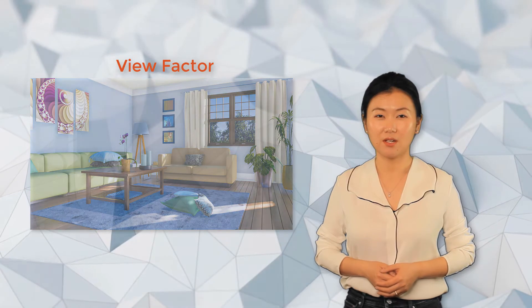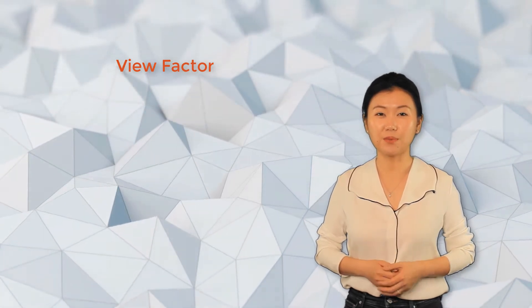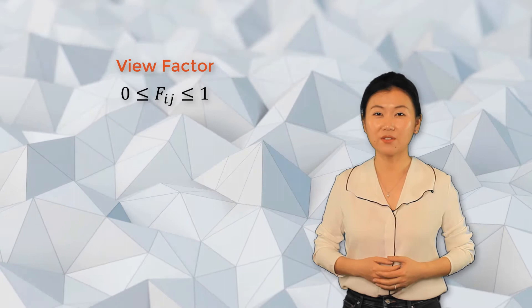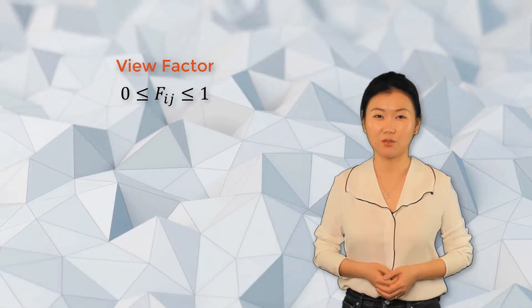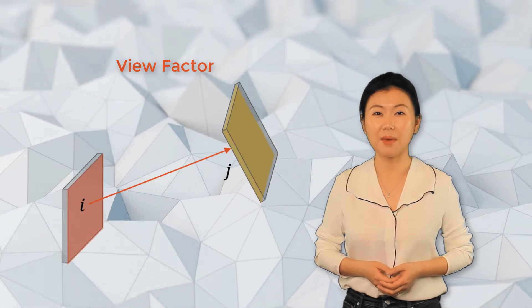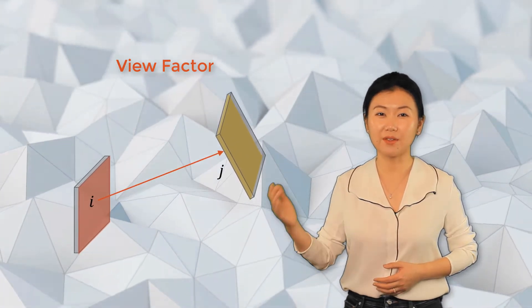It's a scalar value varying between zero and one. When one surface can see another surface, the view factor will be larger than zero. For example, imagine that you're on the same plane of surface i.